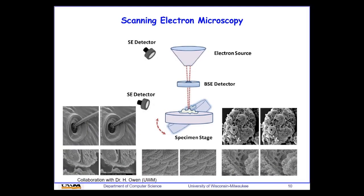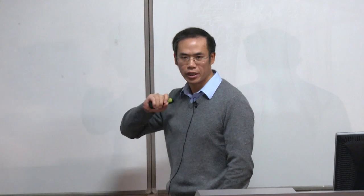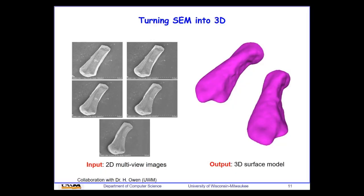These images show SEM examples with two views from different angles — normally 7 to 10 degrees apart. We cannot have too large or too small a gap between views, otherwise we have accuracy issues. One example is an ash particle in the air, very tiny in size. The problem is to take a number of 2D images from different views and reconstruct 3D models from them.